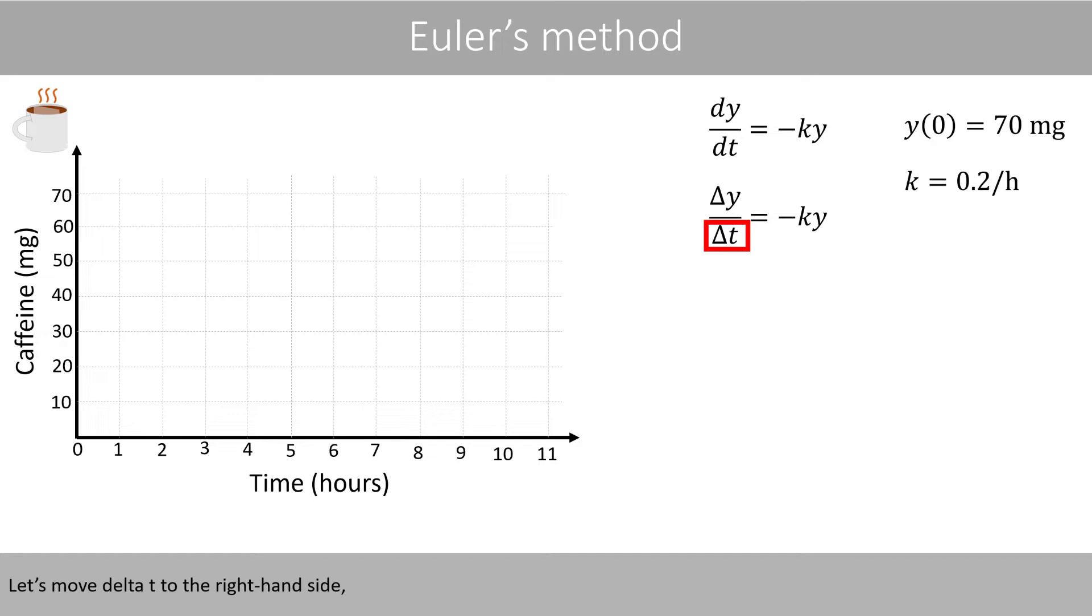Let's move Δt to the right-hand side, so that we have the following equation. Δy represents how much y changes, or how much the amount of caffeine changes, per time step.